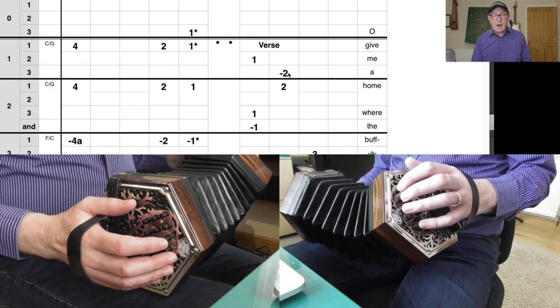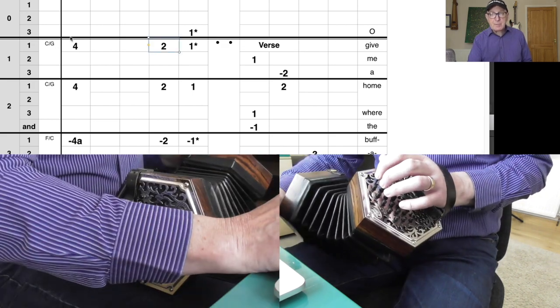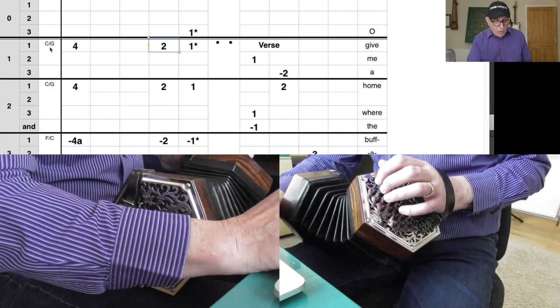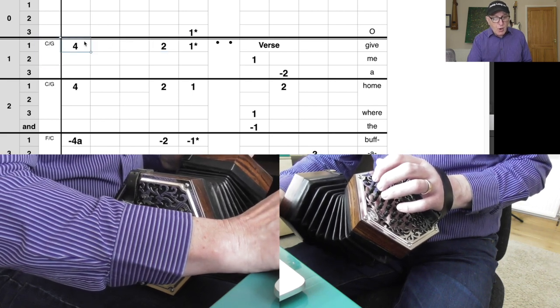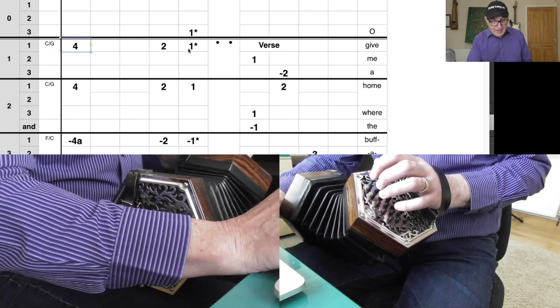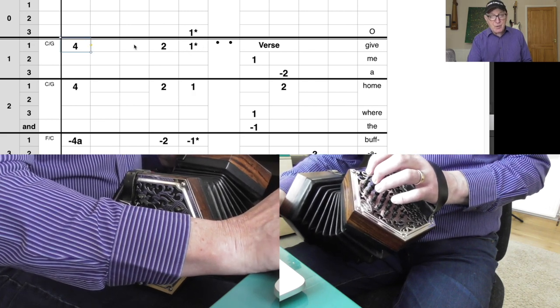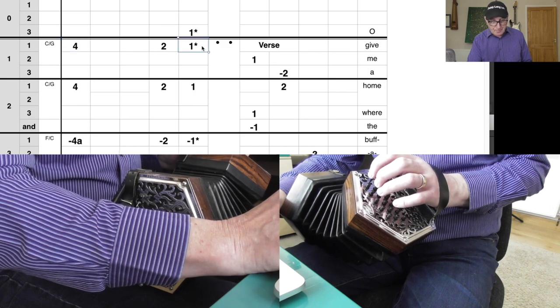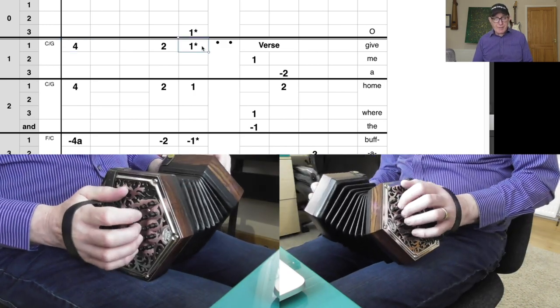So put all that together, bar naught and bar one, you've got this... and that's 'oh give me.' Just to be clear here, I put this C or G over here just so you know what would be the backing chord and what chord you're playing on your left hand side here. But of course this chord also contains the tune note here.